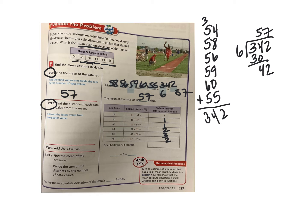Step three: we find the mean of the deviations. Add them all together: 3 plus 1 plus 1 plus 2 plus 3 plus 2 equals 12. There were 6 data points in the set, so 12 divided by 6 is 2. The mean absolute deviation — the average amount the numbers spread away from the mean of 57 — is 2. So the variability on this data is around 2.